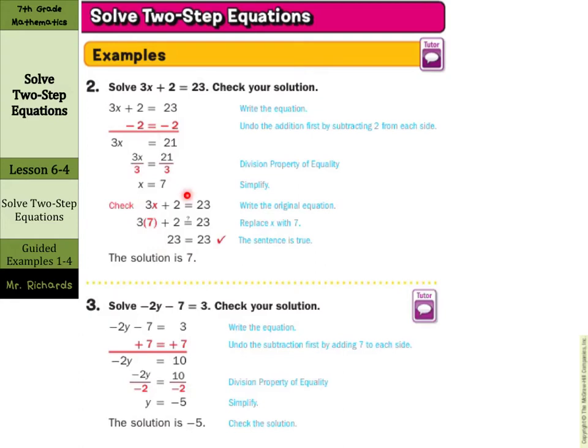Now, when we get into negatives and subtractions, we just have to pay attention. To undo the subtraction, we're going to add the 7 to both sides. What we're left with here, do not lose track of this negative. Negative 2y equals 10. Divide by a negative 2 on both sides, so your answer is y equals negative 5.